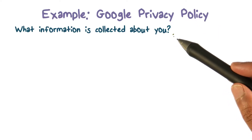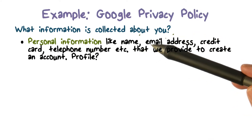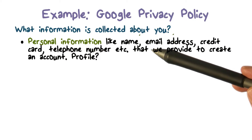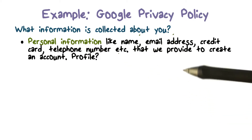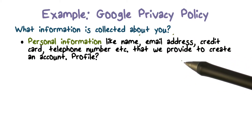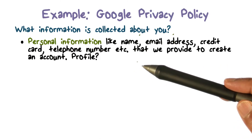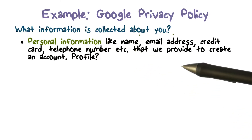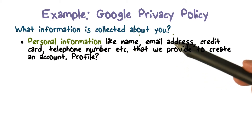Let's start with what information is collected about us by Google. All kinds of personal information that we agreed to give to Google: name, email address, credit card number, telephone number. Gmail now does stronger authentication using your telephone number. This is information we provide to Google when we set up an account — it's private information we're giving to Google.